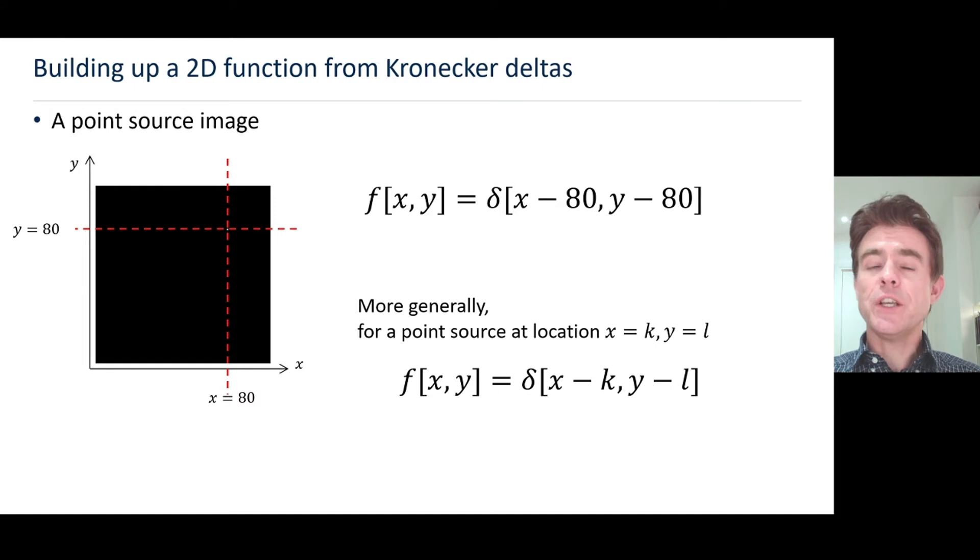Now more generally, as I alluded to in the previous slide, we could consider that point source being anywhere inside that x-y space. So if it's located at position x equals k, y equals l, then of course you've just got to shift the delta function to k and l, and that would give you your point source description of the function f(x,y).